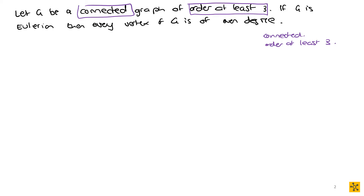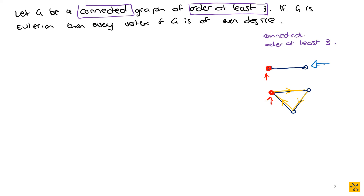For a graph to have a closed trail, say you have two vertices with one edge — remember we work with simple graphs most of the time. In this situation, can we actually have a closed trail? Remember, a closed trail means your beginning and end vertices are the same. Can you touch all the edges and come back without repeating any? No. But the moment you have three vertices, you can possibly do it — it's a possibility, not a guarantee.